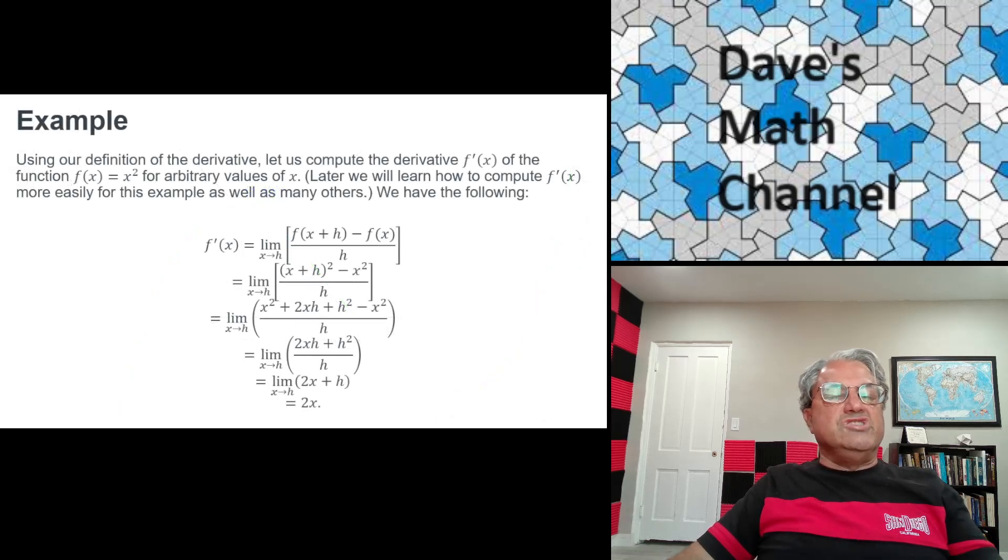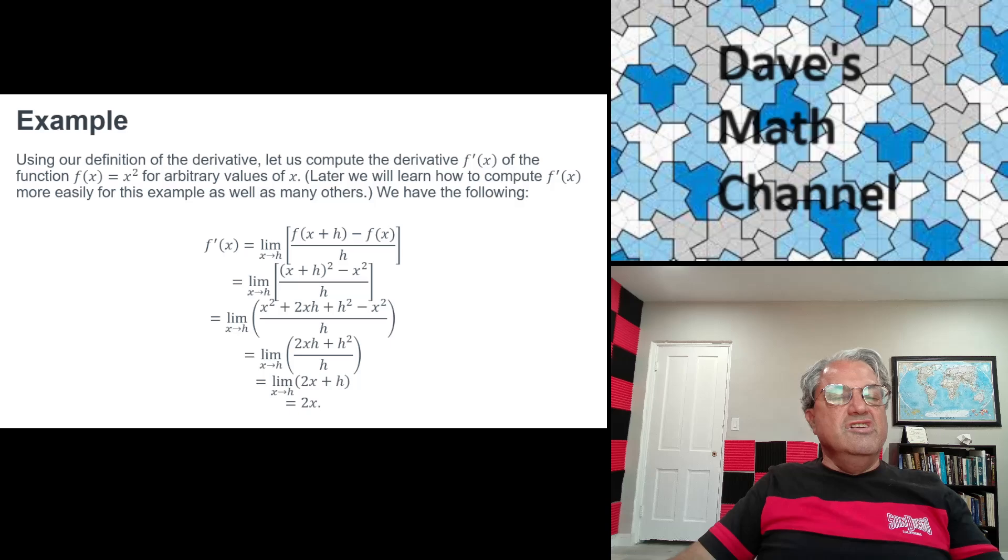I'm just going to finish by actually doing a concrete example here. Usually you don't want to calculate derivatives this way. But when you're first learning about derivatives, it is useful to use the definition in terms of limits to calculate it. So here's an easy function. I'm just going to do f of x equals x squared. That's just a parabola. And I'm going to calculate the derivative of f of x for any arbitrary value of x. I'm not going to write a here. I'm just writing x. So I'm going to get a formula for f prime of x. You can think of x as a particular value of x if you want.